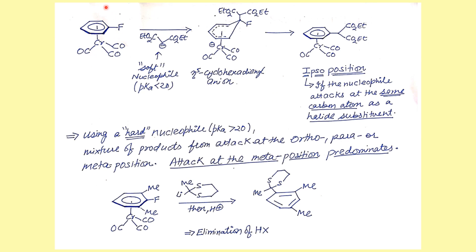The first reaction we are going to talk about is the reaction with diethyl malonate. We clearly understand this is a soft nucleophile. Whenever we talk about a soft nucleophile, they tend to undergo ipso substitution. In the ipso substitution, the nucleophile attacks on the carbon to which the halide is attached. This is called the eta-5 cyclohexadienyl anion, followed by elimination of HF to give the desired ipso-substituted product.